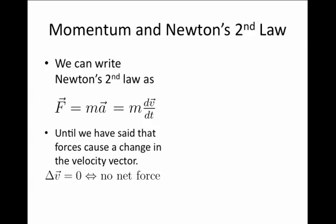Until now, we have said that a net force is necessary in order to cause a change in the velocity vector. If we see a delta v that is zero, that implies there's no net force. Or stated another way, if the velocity at a later time equals the velocity at some initial time, that signifies no net force.